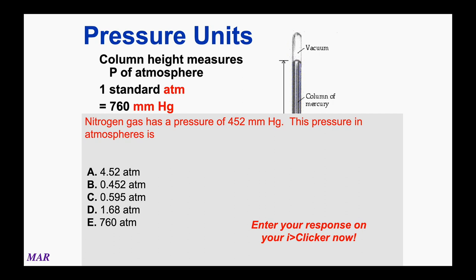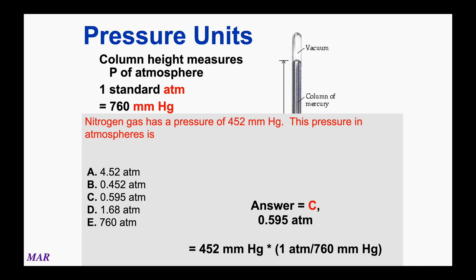Here's an example calculation: nitrogen gas has a pressure of 452 millimeters of mercury — express this in atmospheres. We need to convert using 760 millimeters of mercury per atmosphere, which is an exact conversion so we don't worry about sig figs there. Mathematically, 452 divided by 760 comes out to be 0.595 atmospheres. That's the atmosphere value for 452 millimeters of mercury.